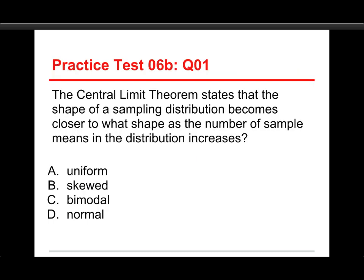The first question on this test is: the central limit theorem states that the shape of a sampling distribution becomes closer to what shape as the number of sample means in the distribution increases? The choices are A, uniform; B, skewed; C, bimodal; or D, normal.